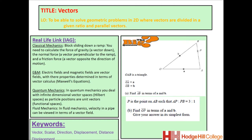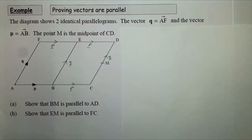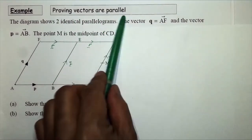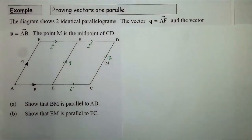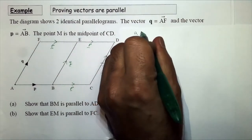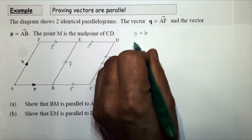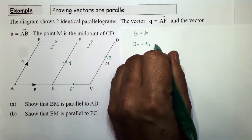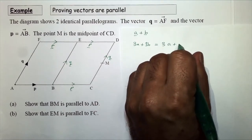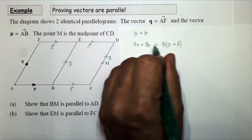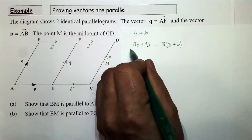This lesson on vectors looks at solving geometric problems involving vectors — dividing a vector into a given ratio and proving when vectors are parallel. In this example, we're going to show how we can prove vectors are parallel. If we have a vector a plus b, a parallel vector will be a multiple of this, for example 3a plus 3b, which factorizes to 3(a plus b). Therefore these two are parallel.